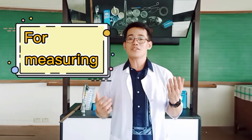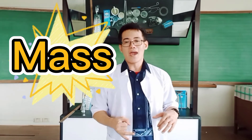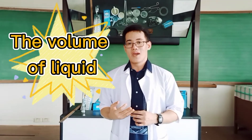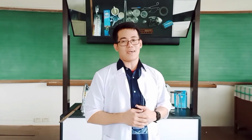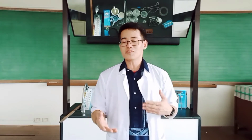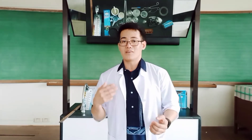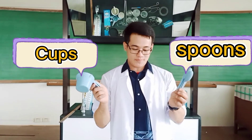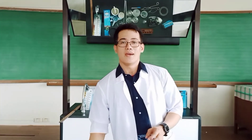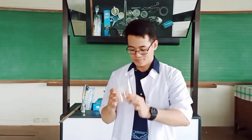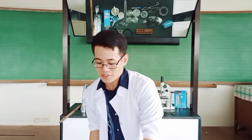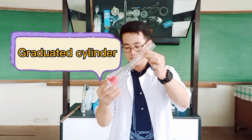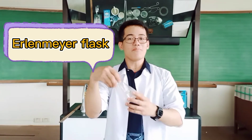Let's move on to the laboratory tools that are used in measuring the net, the mass, and the volume of liquid. To measure the volume of liquid substances, make sure the tools that you are using have the graduation or decalibration. We can use the measuring spoons and cups, the beaker, the graduated cylinder, and the earned major flask.